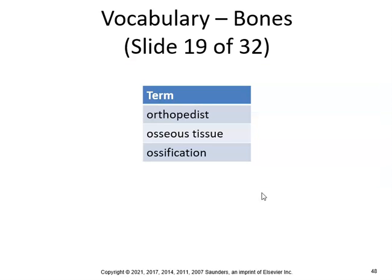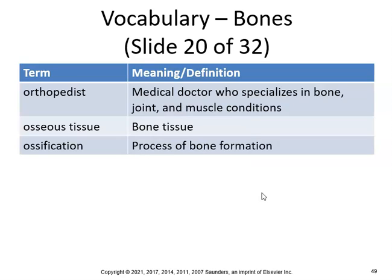An orthopedist is a medical doctor specializing in bone, joint, and muscle conditions. Osseous tissue is bone tissue. Ossification is the process of bone formation.